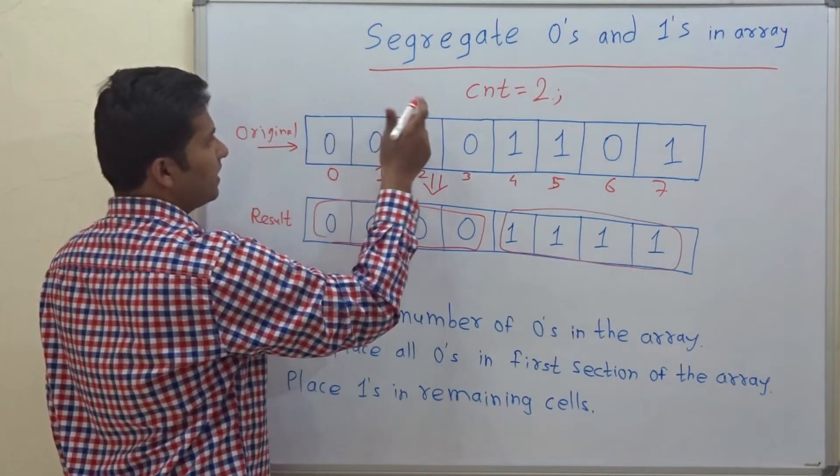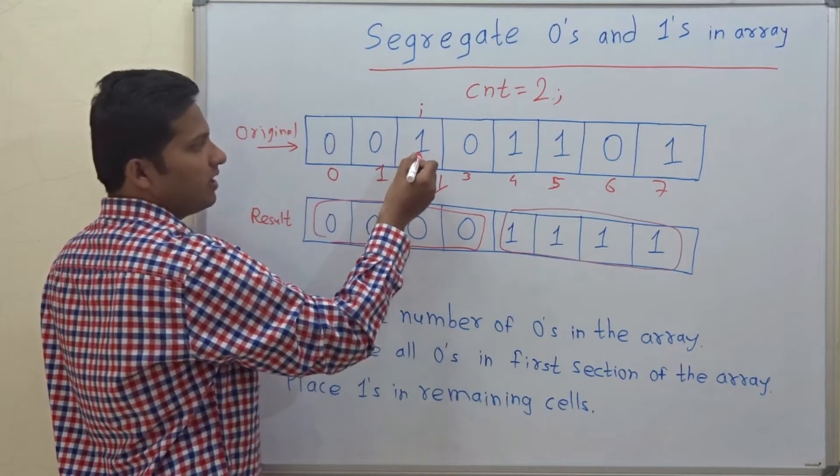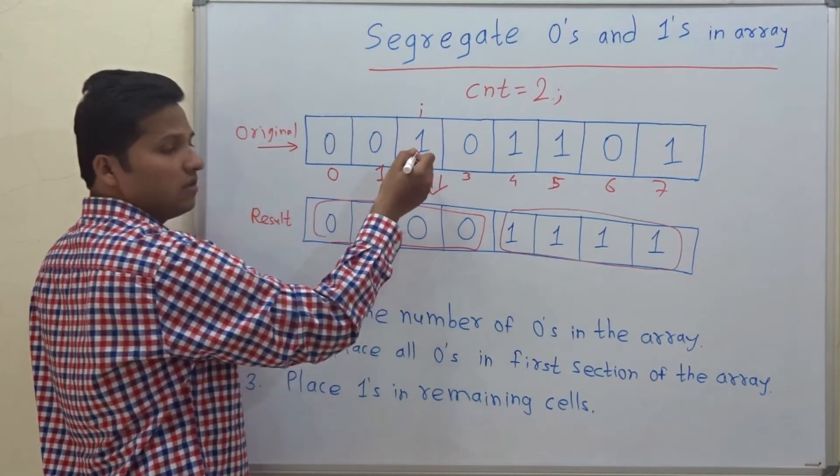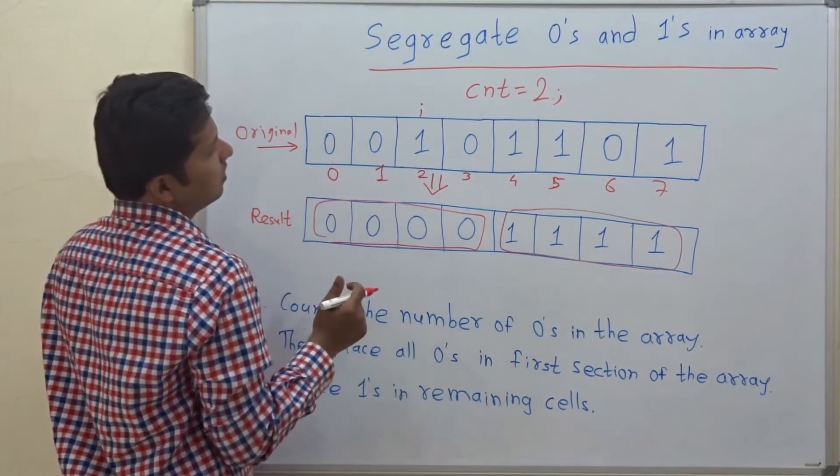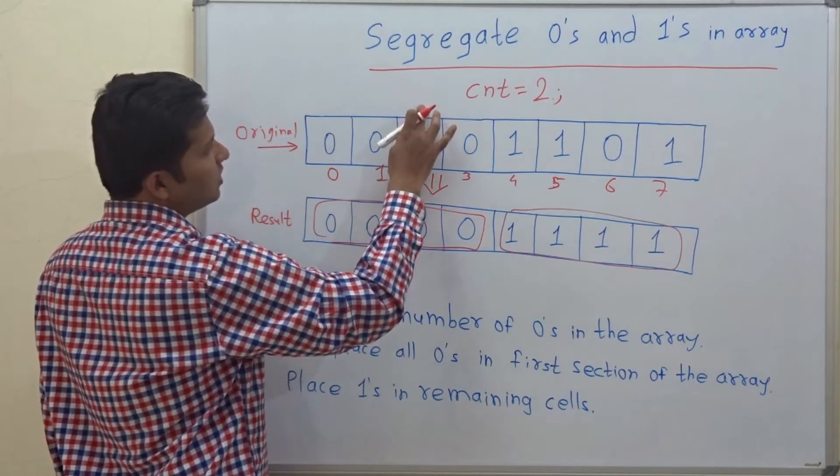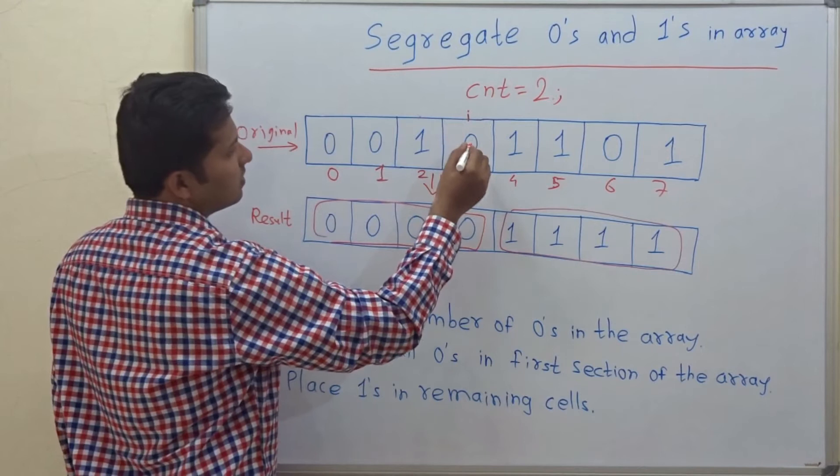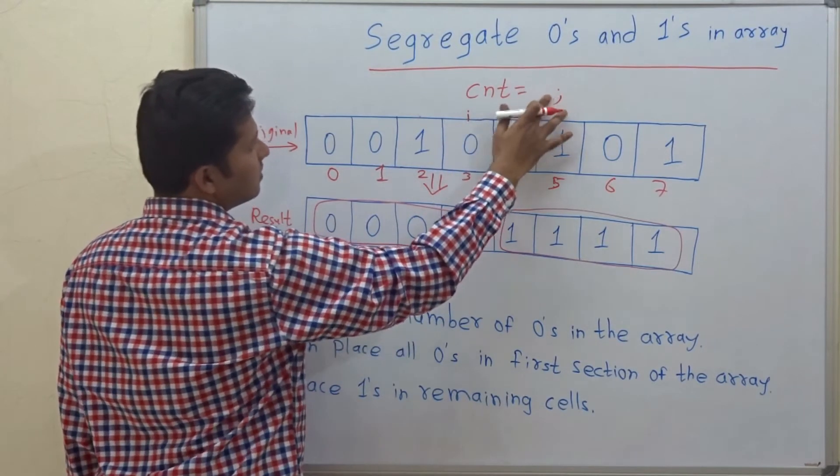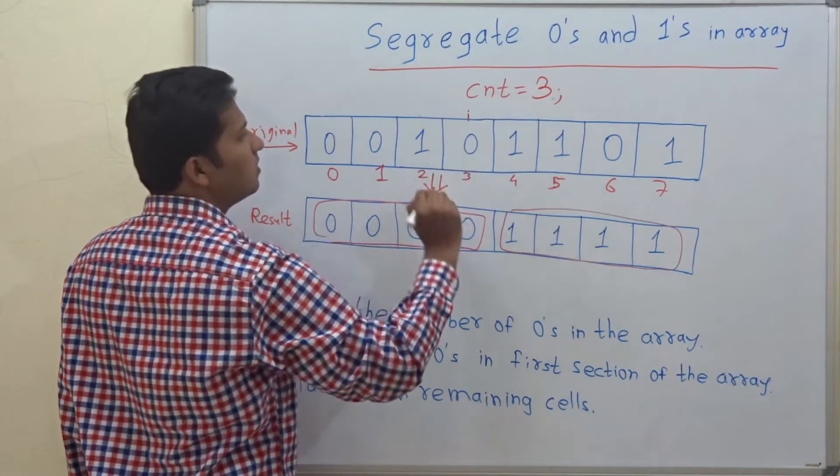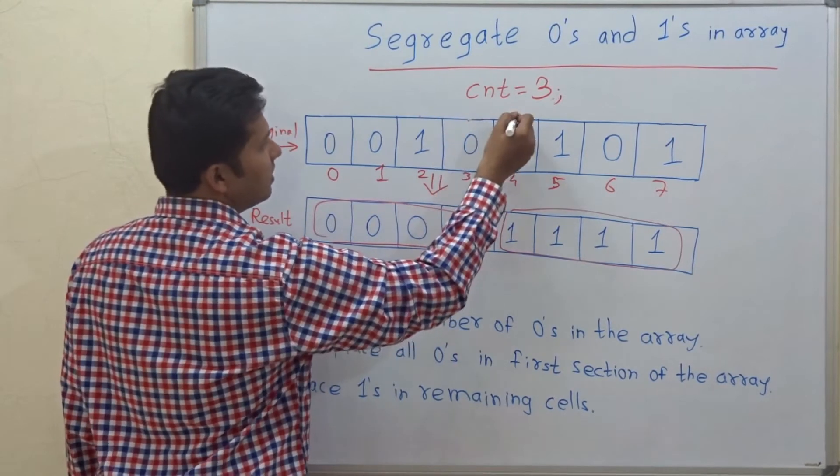Again increment i. So element at ith position is 1. No. So you should not increment the counter. You just increment i. Again it is 0. So increment the counter and increment i.